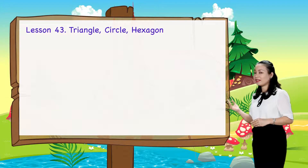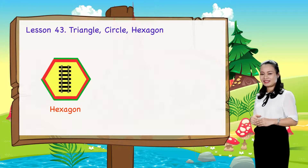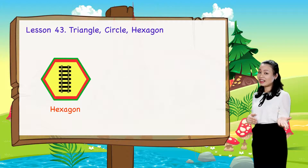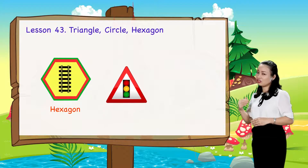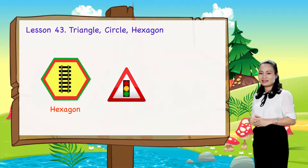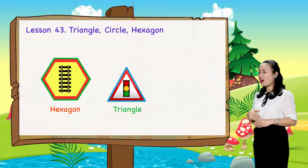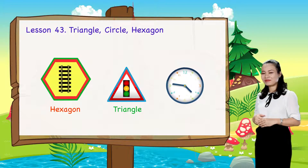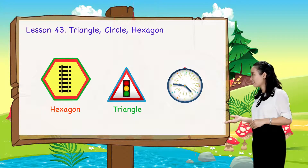What shape is this traffic sign? It's a hexagon. What shape is this traffic sign? It's a triangle. What shape is this clock? It's a circle.